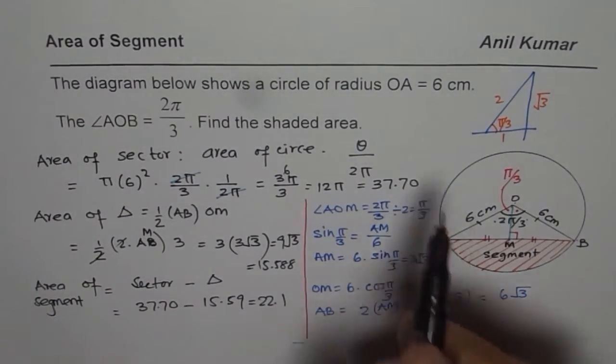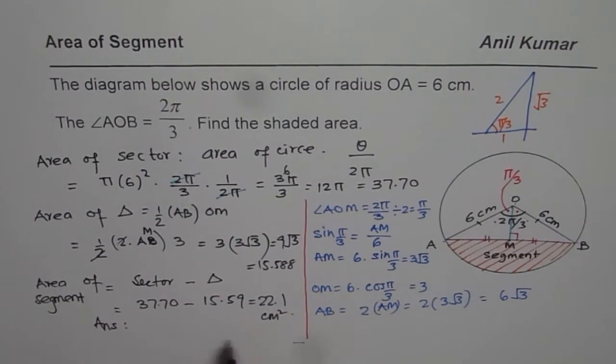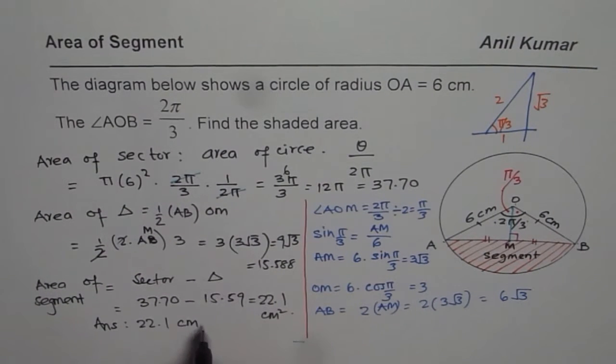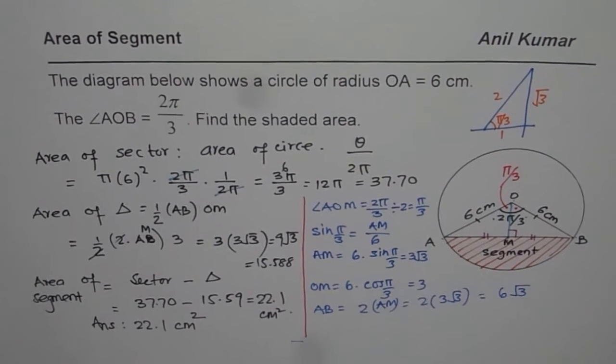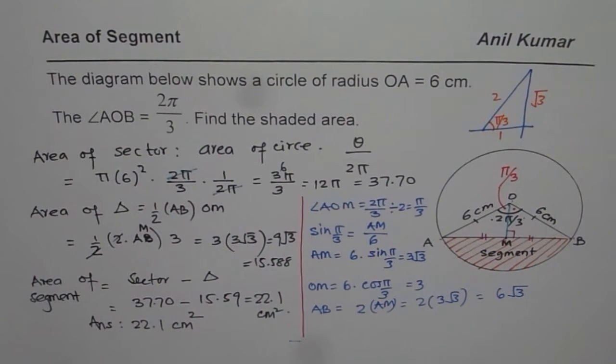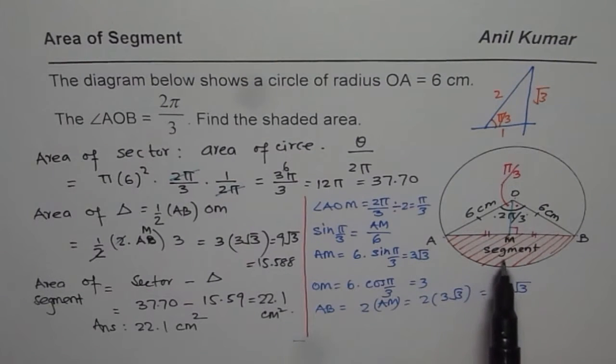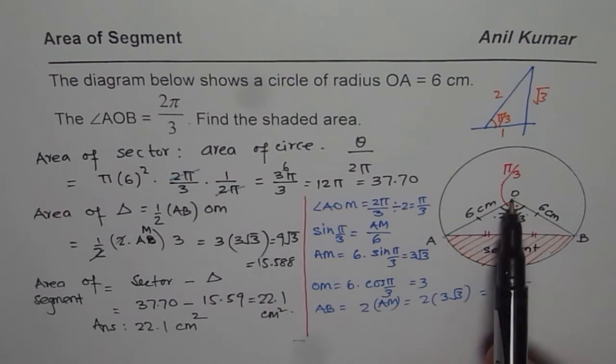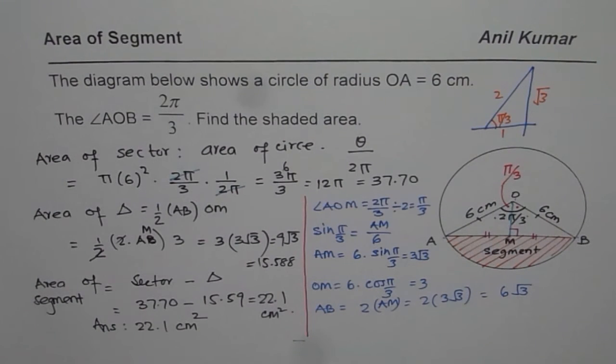Since the units are in centimeters we can write this in centimeter square. So we get our answer that the area of the shaded region is 22.1 centimeter square. I hope the steps are clear and this is a very important question from test point of view also. So remember segment area you can find by subtracting area of triangle from the area of sector. That's how you do it. Thank you and all the best.